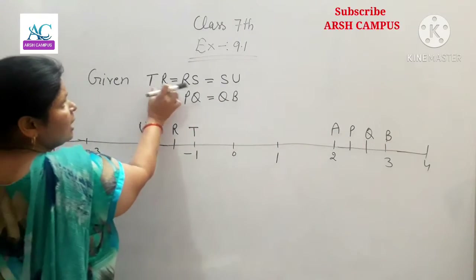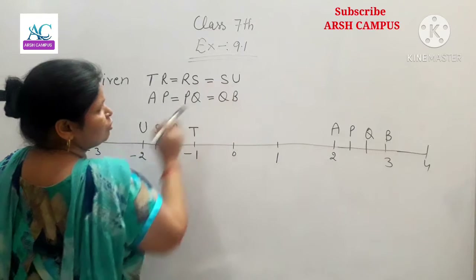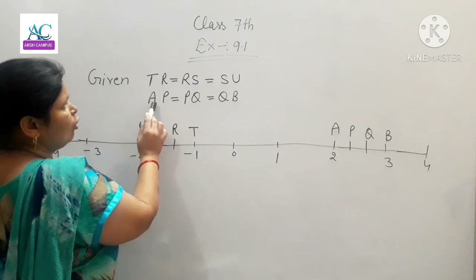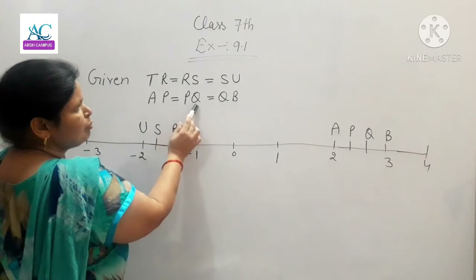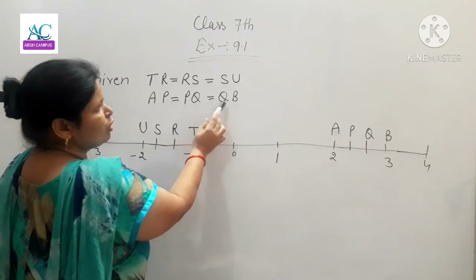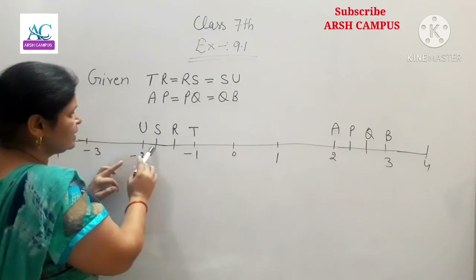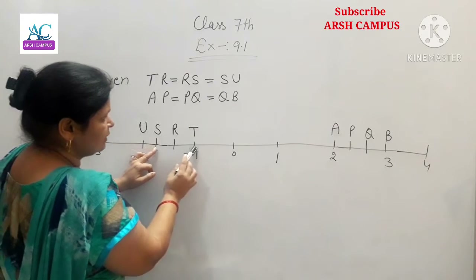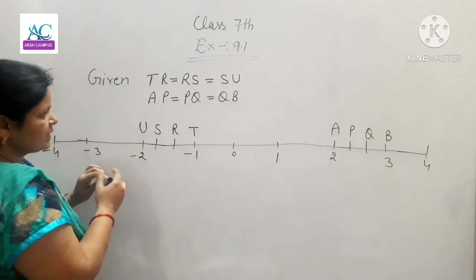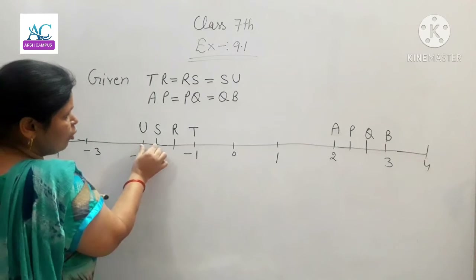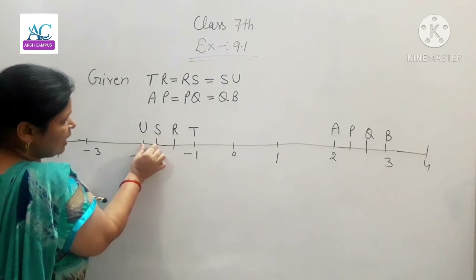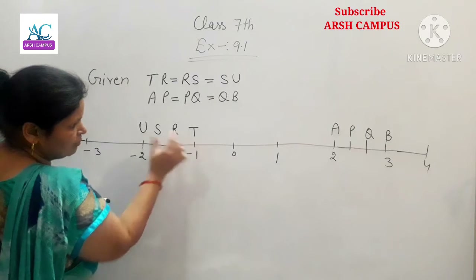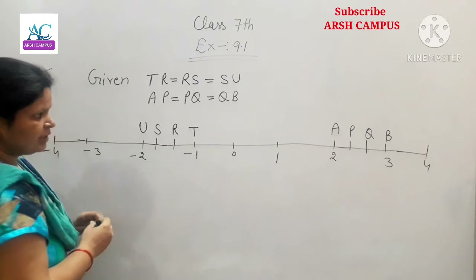Dekho kya diya hua hai: TR is equal to RS is equal to SU, aur AP is equal to PQ is equal to QB. Yarni ki yeh jo distance hai woh equal hai inke beech mein. Distance equal hai, aur yeh kitne part mein divide hua? Dekho — 1 part, 2 part, aur 3 part. 3 part mein.